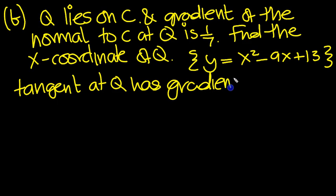Because that's perpendicular to the normal, the tangent gradient at Q must be, what times this makes minus 1? Well, it would be minus 7, isn't it? Yeah, minus 7 times 1/7 is minus 1. So this is the gradient of the tangent at Q.